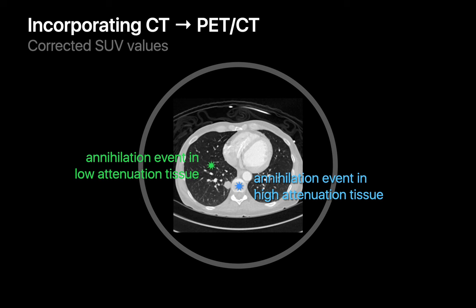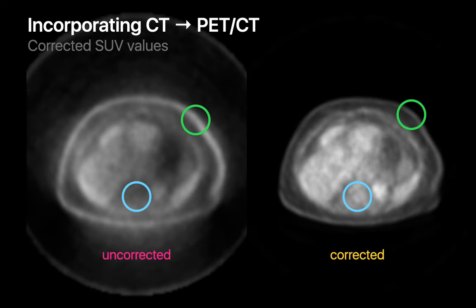A concurrent CT scan lets us correct for these effects. Here's an example of how FDG uptake near the skin versus FDG uptake in the spine changes before and after correction. It's important to point out that the CT images acquired during a PET-CT scan are usually non-contrast images, since intravenous contrast would make many organs appear higher in attenuation and result in an overcorrection of the PET image.